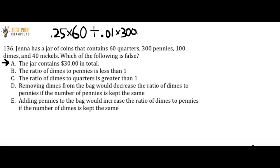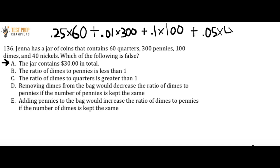And then we deal with the 40 nickels: one nickel is worth $0.05, multiplied by 40. If you plug all of this into your calculator, you'll figure out that the jar contains $30 worth of coins. So A checks out — it is true. Remember, we're looking for which one is false. Now let's get into the more challenging answer choices. B says the ratio of dimes to pennies is less than 1.